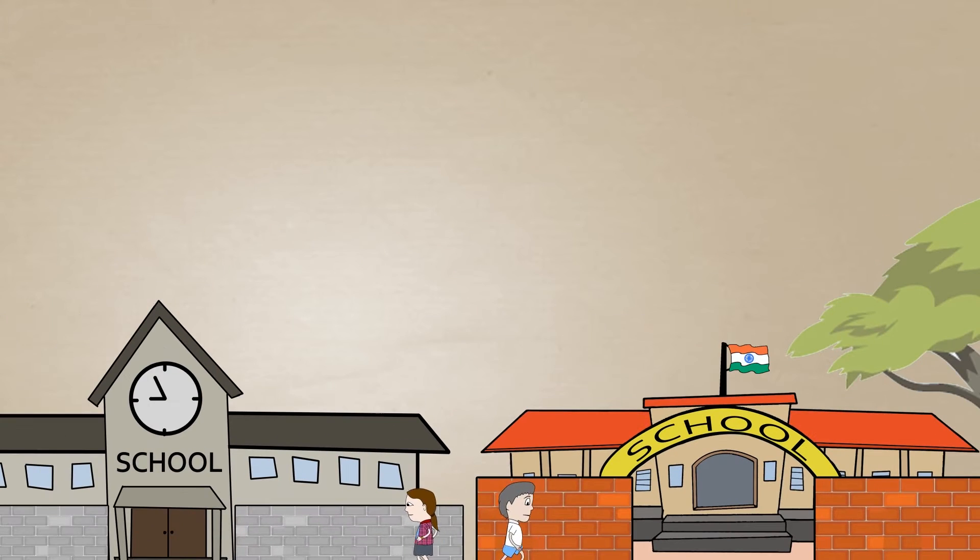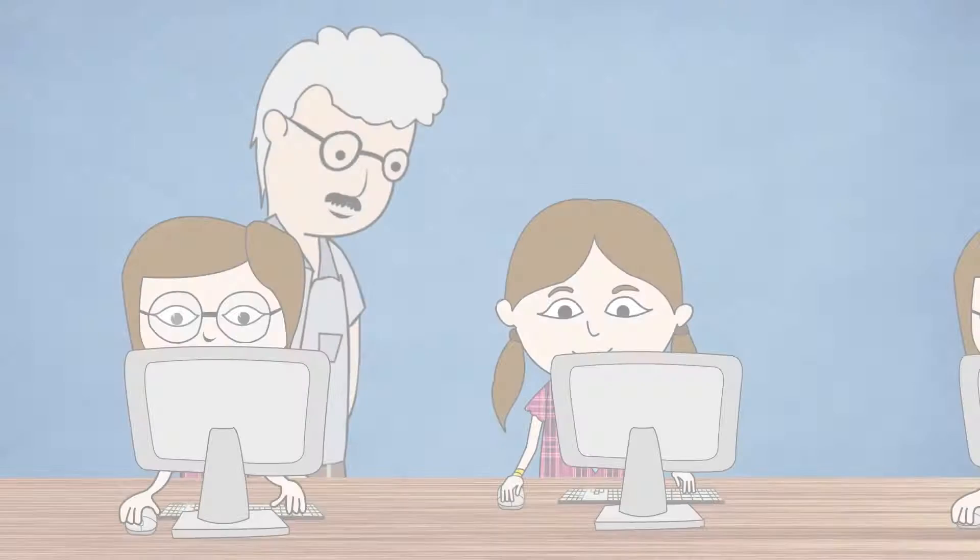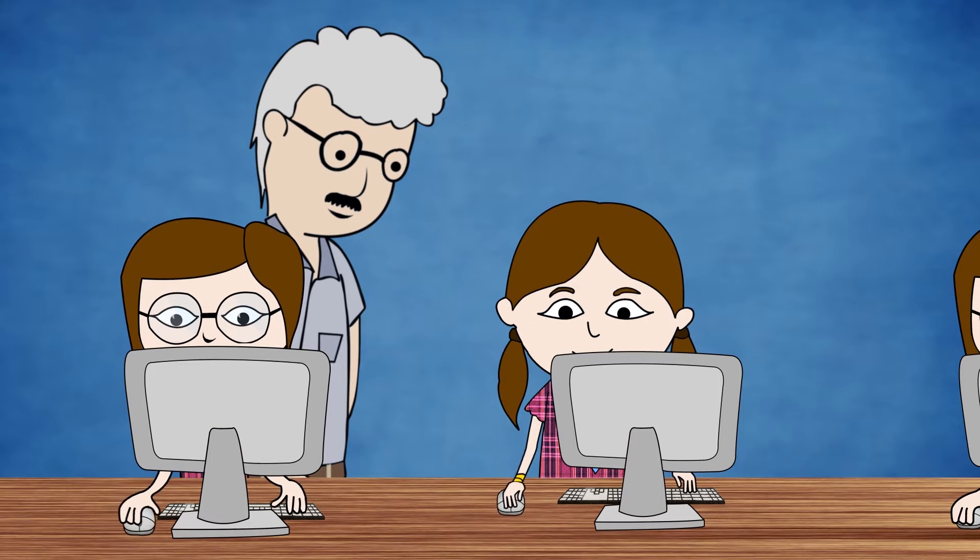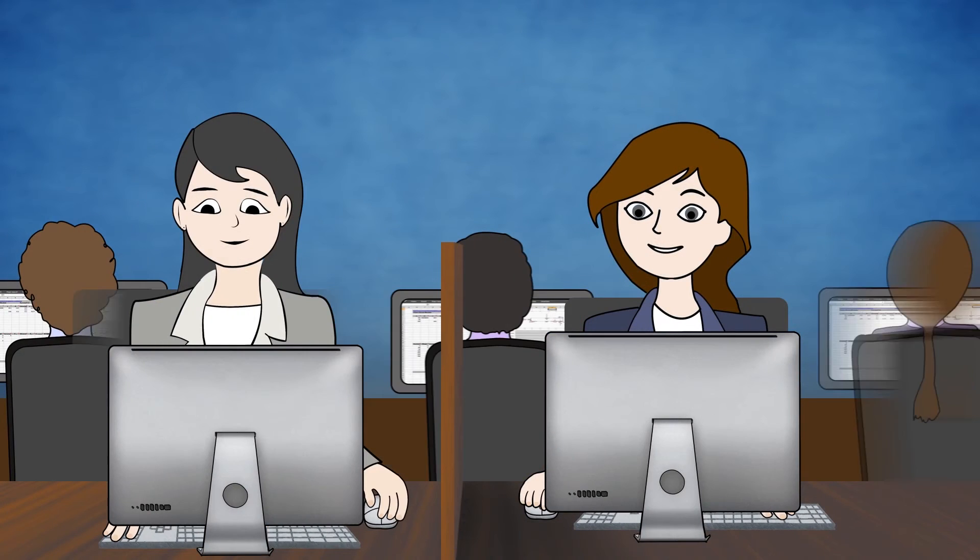Jay and Gauri are school-going kids. Gauri's school has computers and internet facilities, helping her learn the latest information about the world around her, making her highly employable.